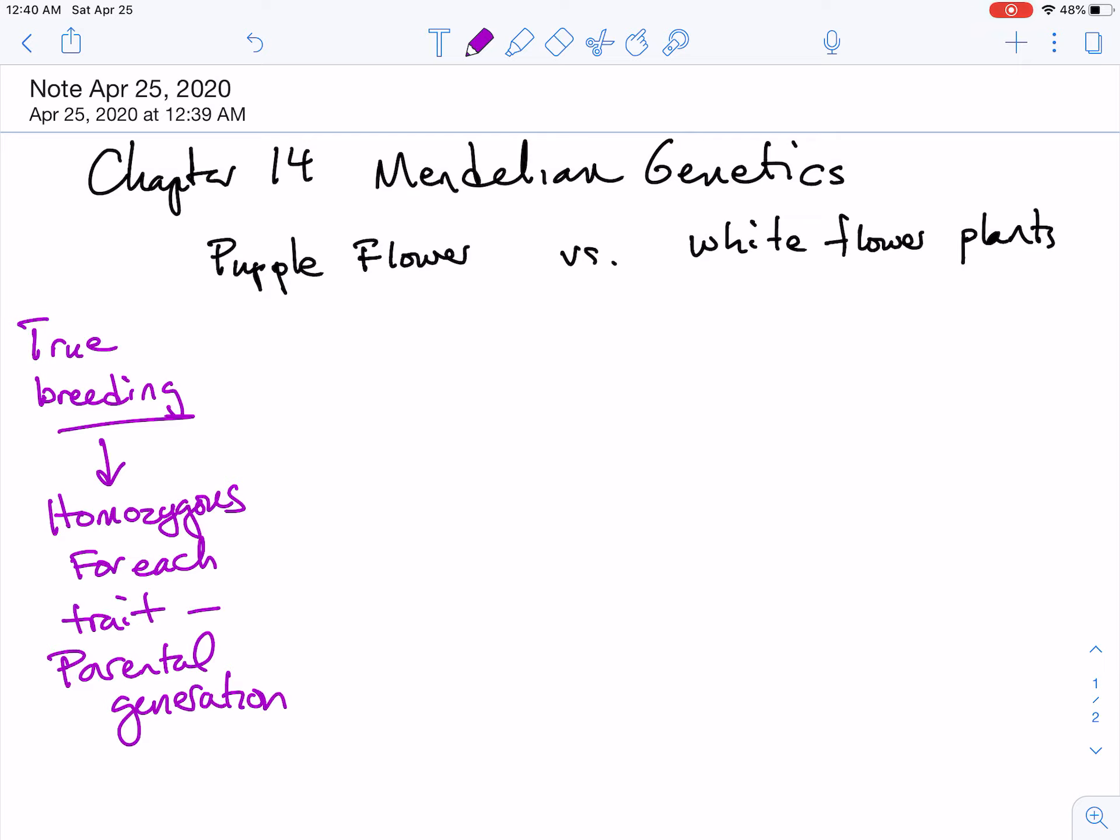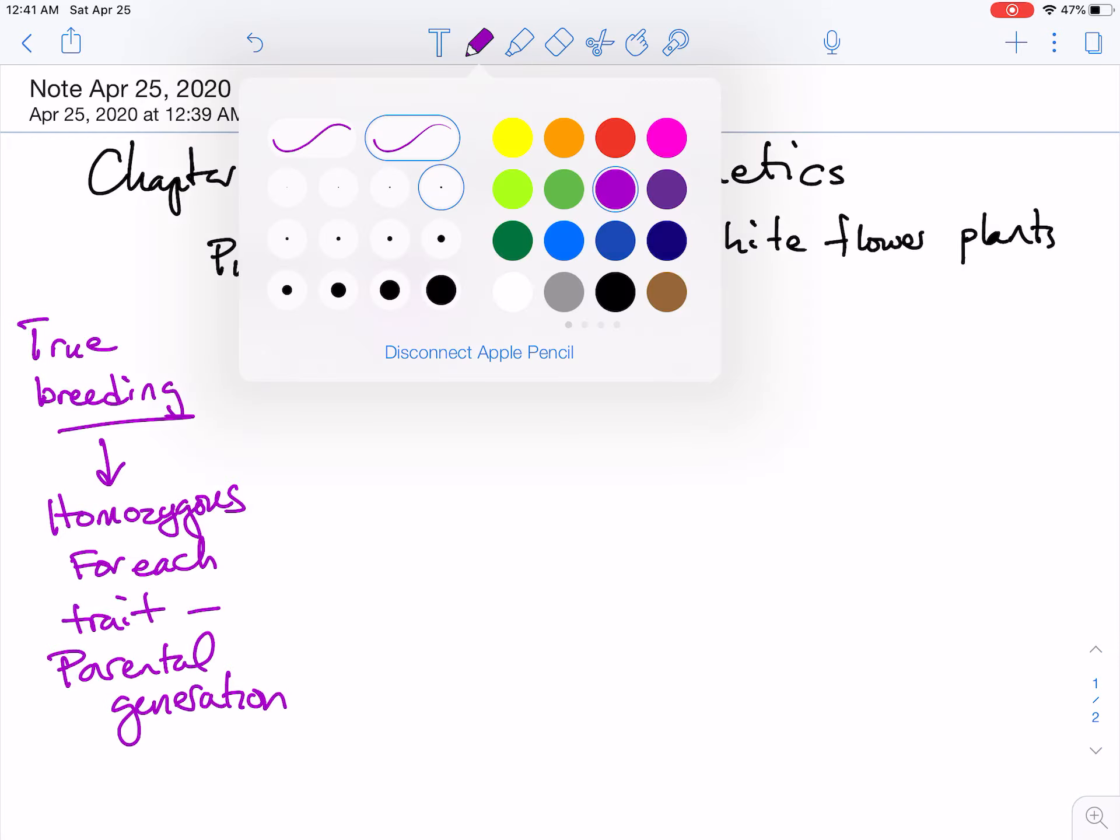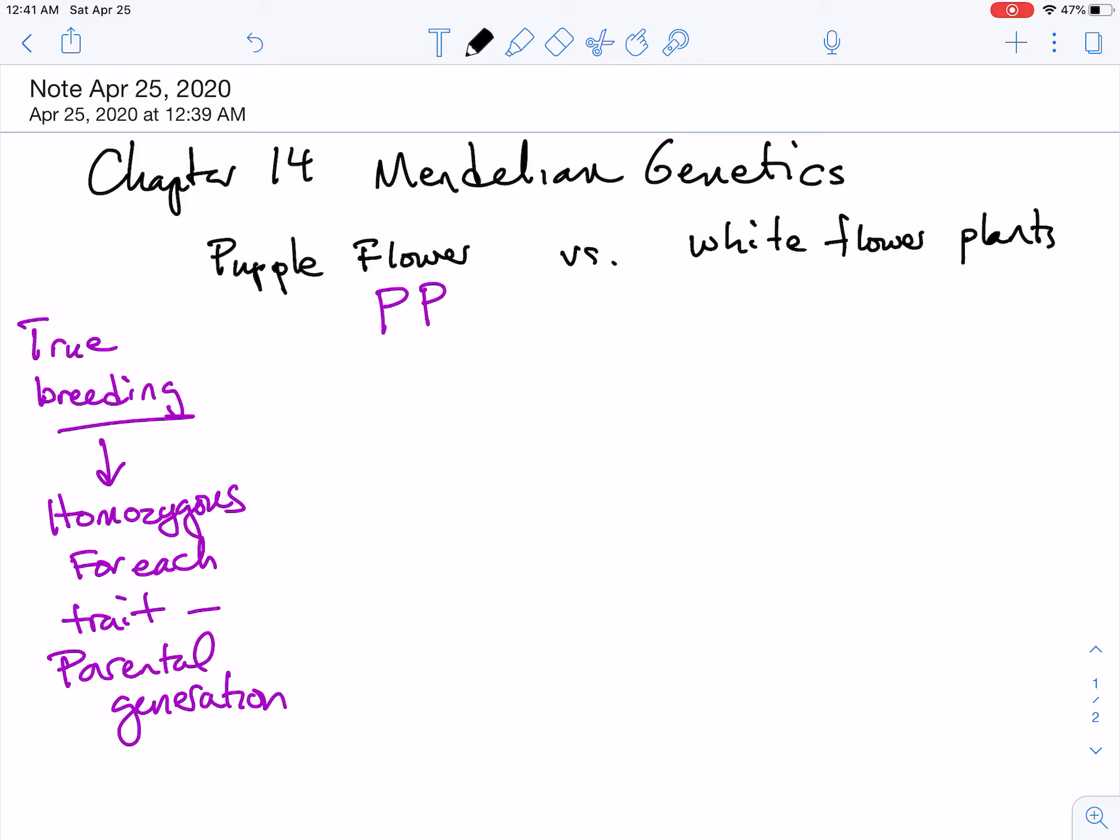So with purple flowers, we know it's a dominant trait, so we expect to write big P, big P. With white flower plants, we know it is a recessive trait. I'm not going to make white P here, so we'll just do it in black - little p, little p. I'm going to make a little curly in my p so you can tell them apart. So that's going to be homozygous recessive, and this one here is homozygous dominant.